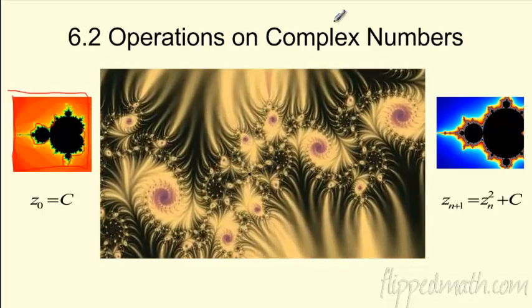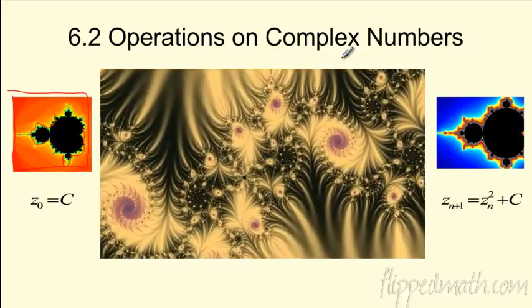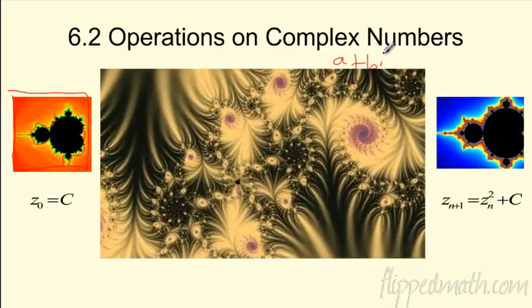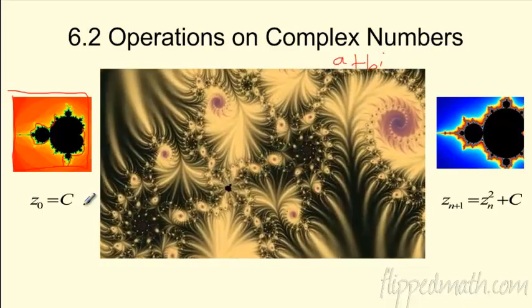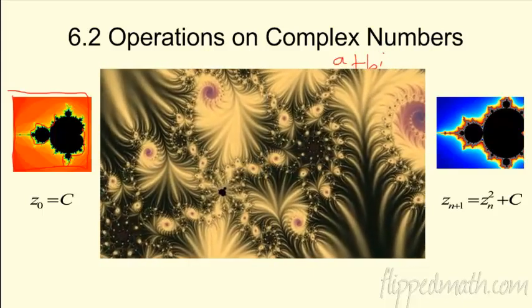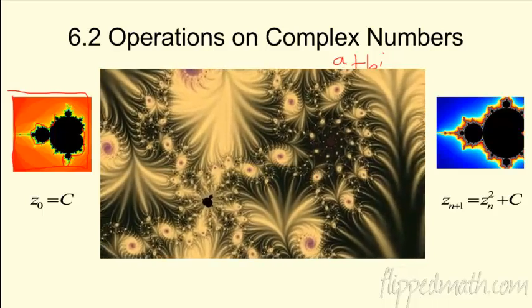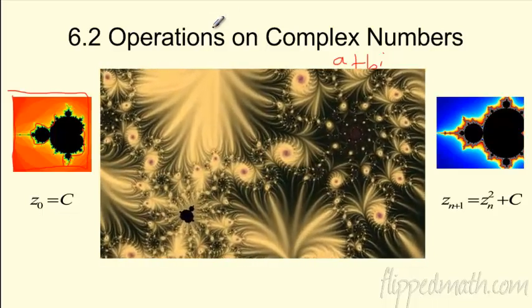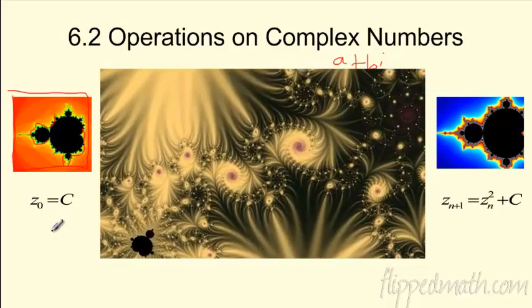How does that come about? It comes about from complex numbers. Remember A plus Bi from the last section? You can use that to make these cool different fractals. But we have to know operations — we have to know how to add, subtract, multiply, and divide with them.